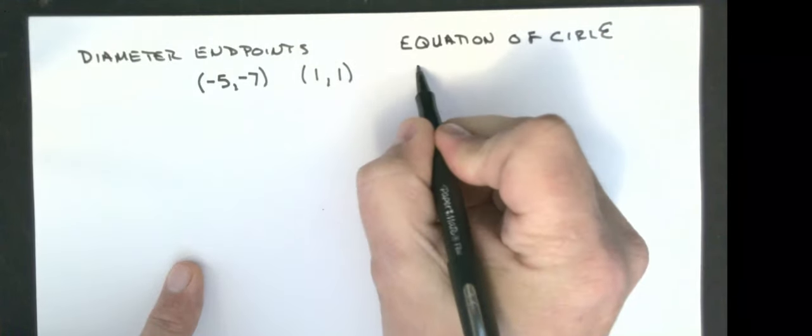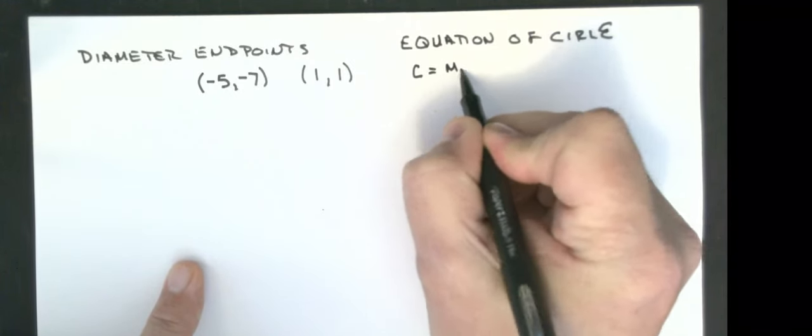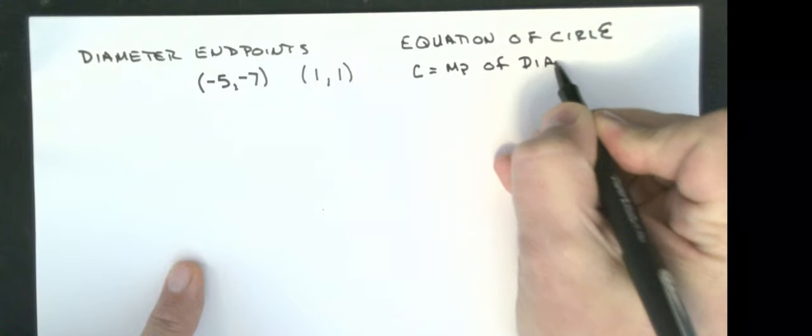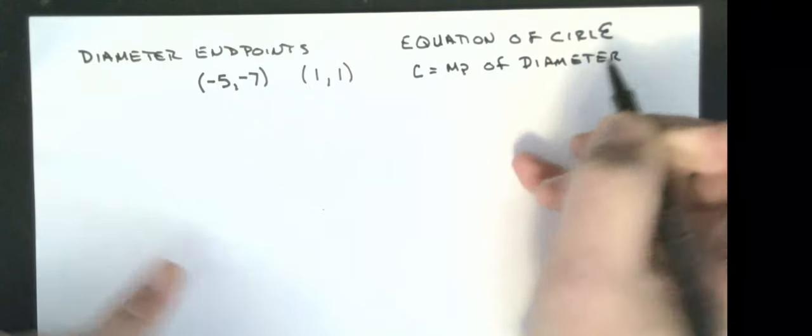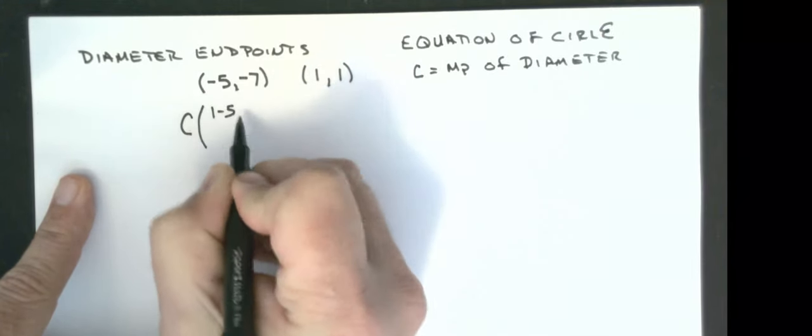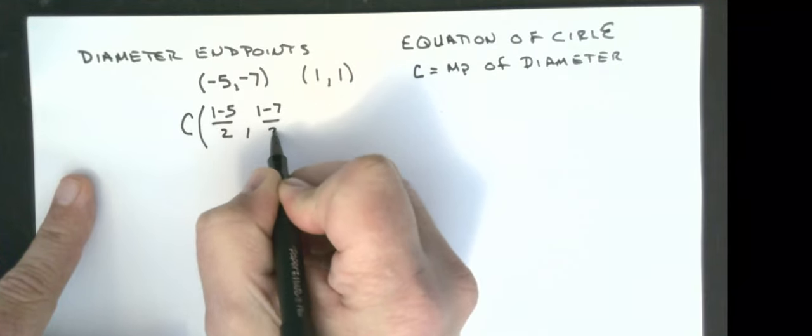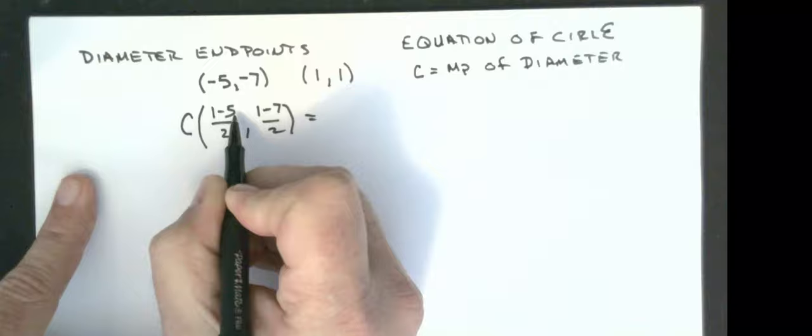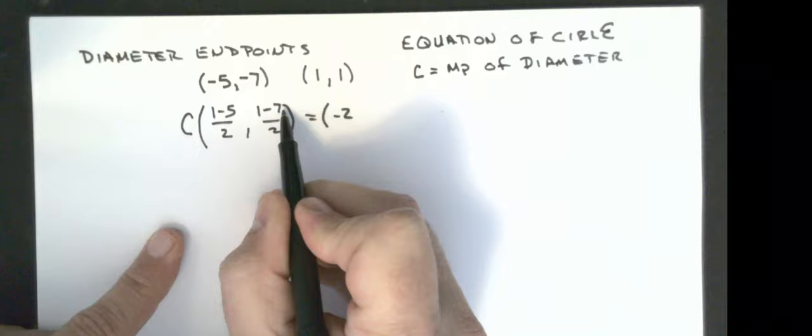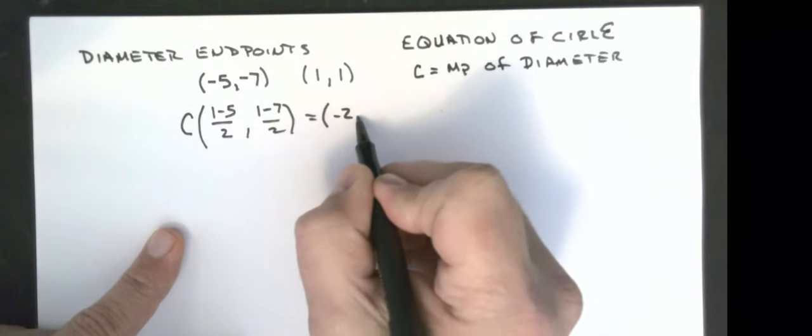So what I need is I need to find the center. The center is going to be at the midpoint of diameter points. So my center is going to be at one minus five over two, comma, one minus seven over two. One minus five is negative four. Negative four over two is negative two. Then one minus seven is negative six. Negative six over two is negative three.